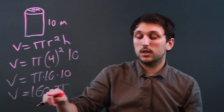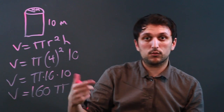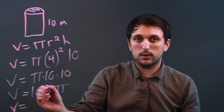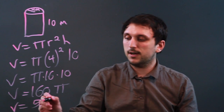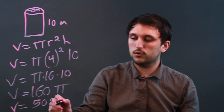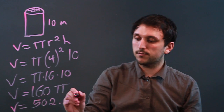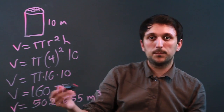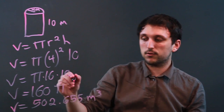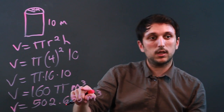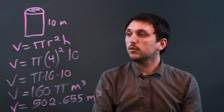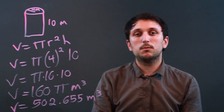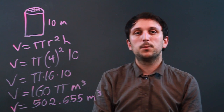Now, if you do need to calculate pi, pi is roughly 3.14. And you would multiply 160 by pi and get 502.655 meters cubed. If you're allowed to leave this answer, you can say the answer in meters cubed. I'm Charlie Kasov, and you just learned how to calculate meters cubed in a cylinder. Thanks a lot.